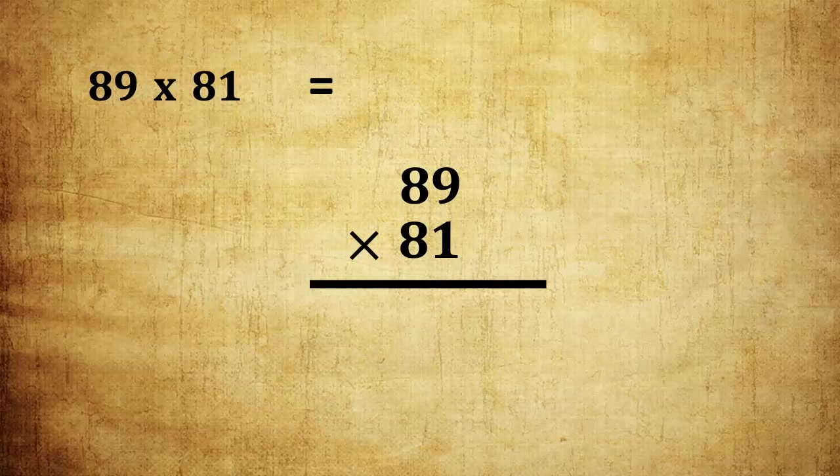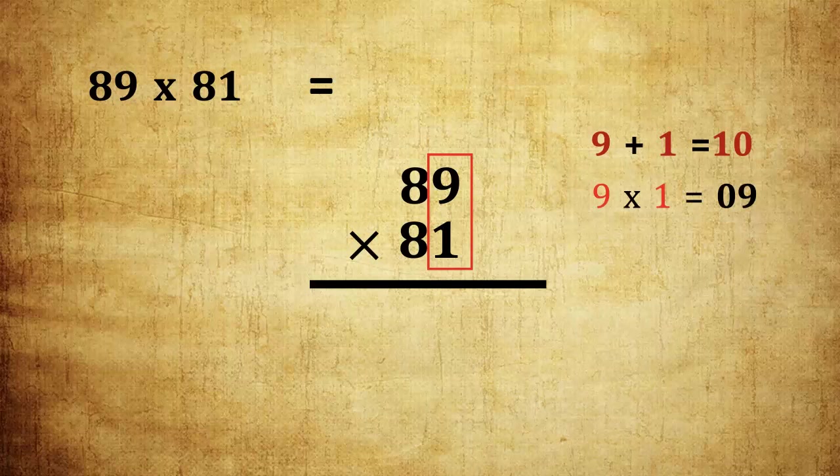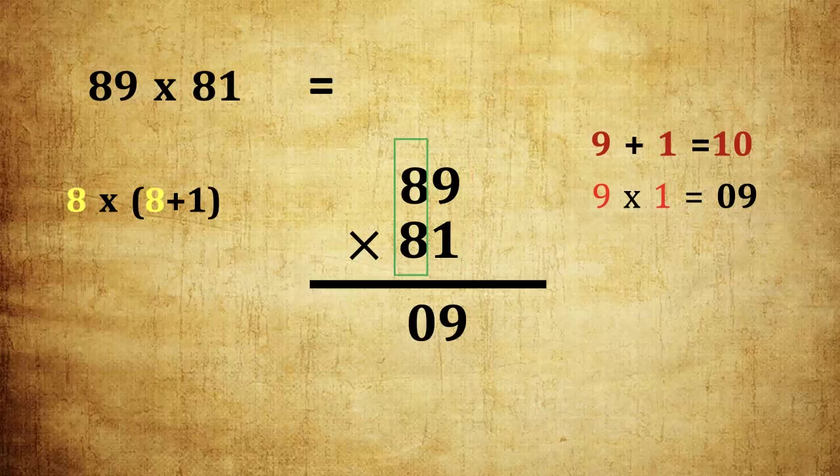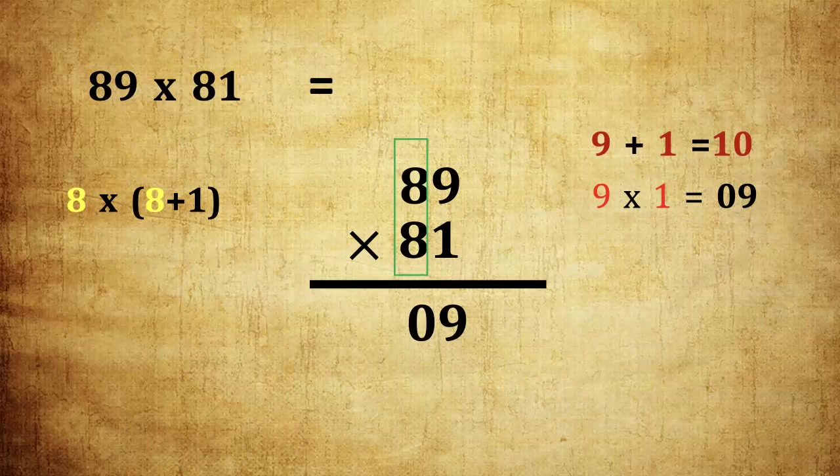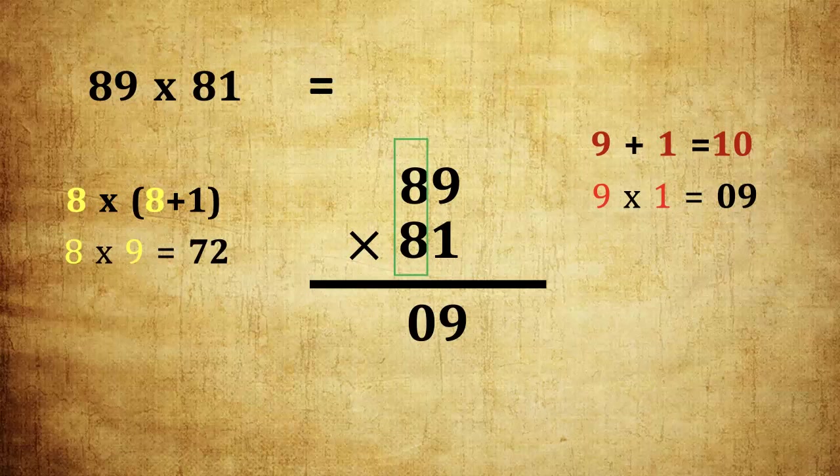89 into 81. Unit place digits are 9 and 1, previous digits same. Add 9 and 1, we get 10. So multiply 9 and 1 is 9, write 09. Then next step, 8 into 1 more than the 8.